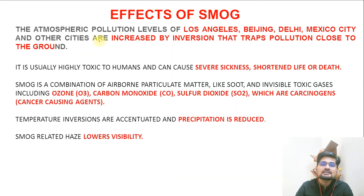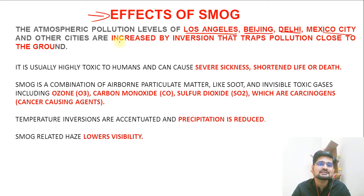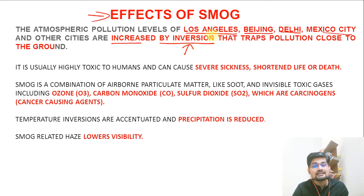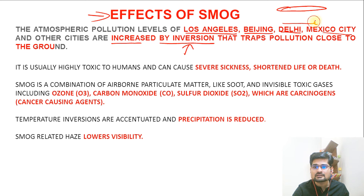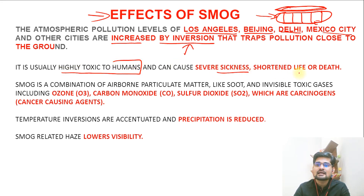Now, what are the effects of smog? Atmospheric pollution levels in cities like Los Angeles, Beijing, Delhi, and Mexico City are increasing due to temperature inversion, especially in winter. An inversion layer is created between the earth and upper atmosphere, trapping pollutants near the surface. Smog is usually highly toxic to humans, causes severe sickness, shortens life, and also leads to death in many cases.